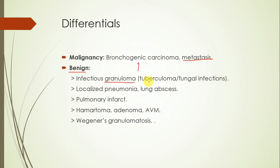Among the benign differentials, there are multiple possibilities. It could be an infectious granuloma such as a tuberculoma or a fungal infection. For instance, if a patient comes from an Asian background — especially Indian or Bangladeshi — we would consider tuberculoma. But if the patient is from the United States residing in areas endemic for histoplasmosis such as Mississippi, we might consider histoplasmosis. Other differentials include localized pneumonia, where the patient would have fever and productive cough with rust-colored sputum, shortness of breath, and chest pain.